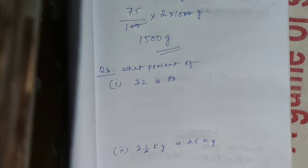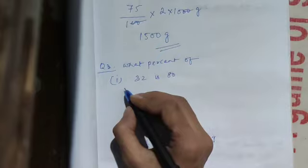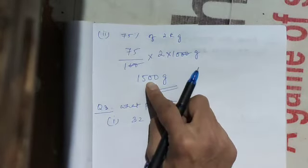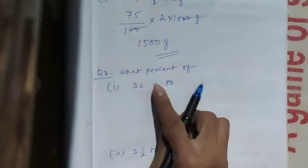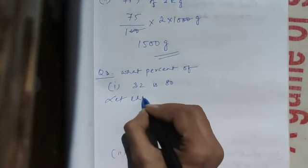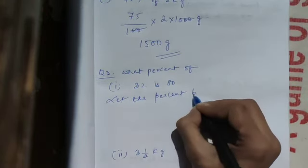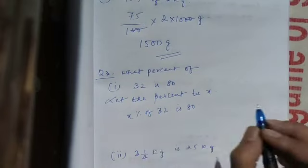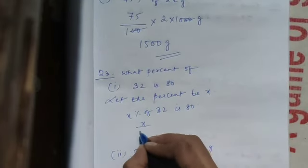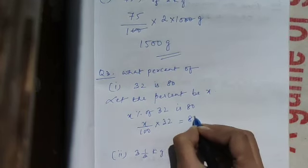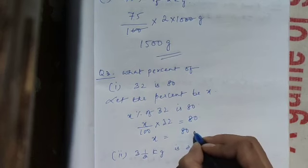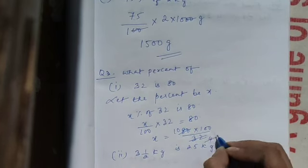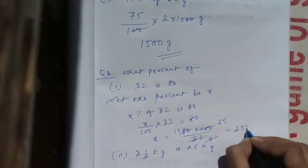What percent of 32 is 80? Percent is not given — that is what they are asking. Let the percent be x. So x percent of 32 is 80: x divided by 100, times 32, equals 80. Keep x here, bring 100 up and 32 down: 80 times 100 divided by 32. Cancel: 8 goes into 80 ten times, 8 goes into 32 four times, 4 goes into 100 twenty-five times. Then 25 times 10 is 250. So x is 250 percent.